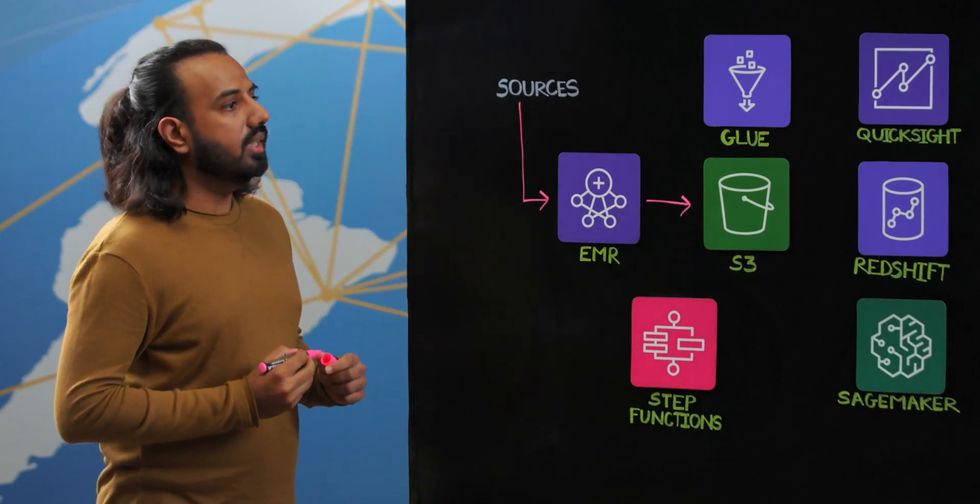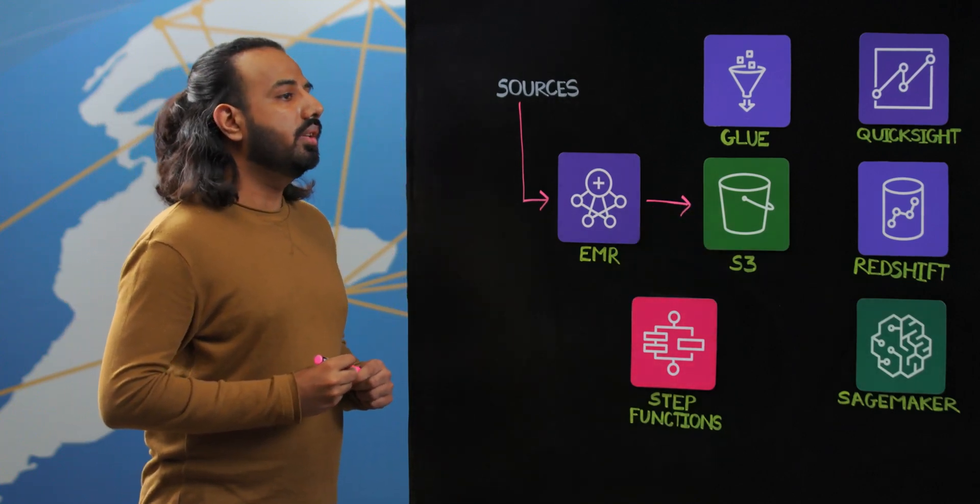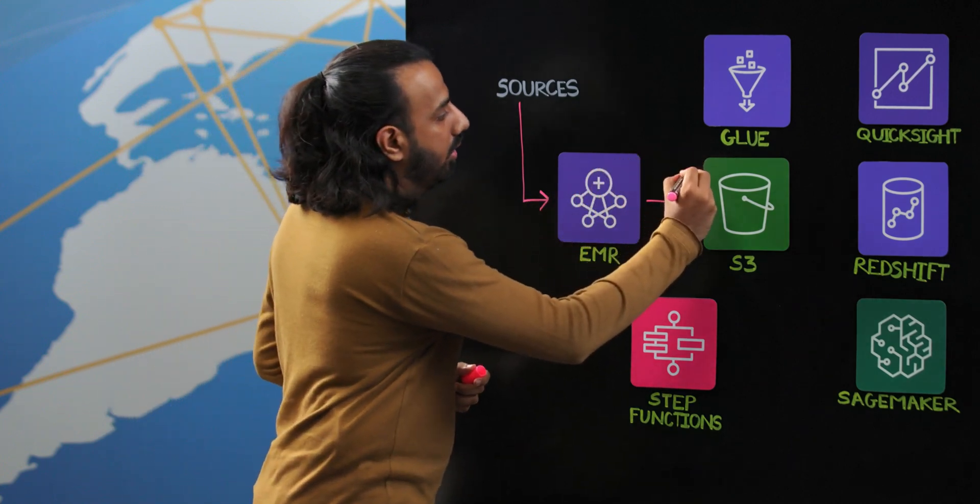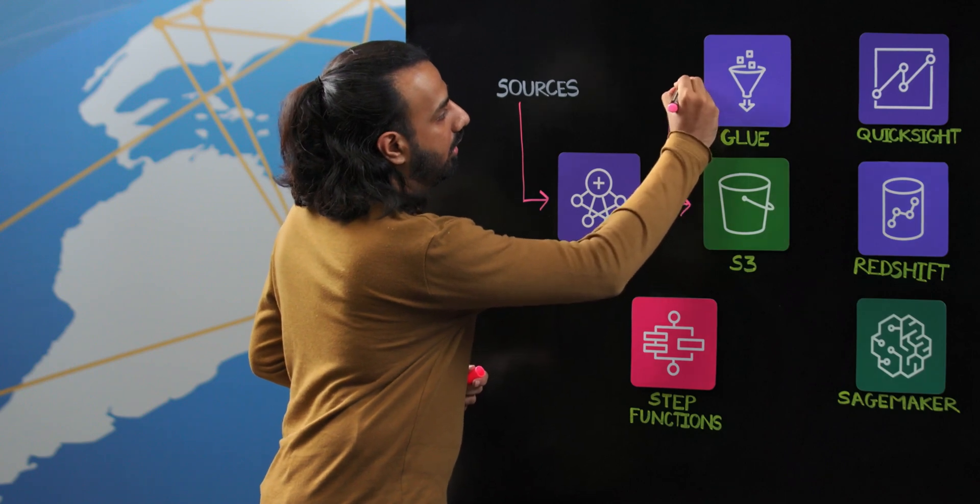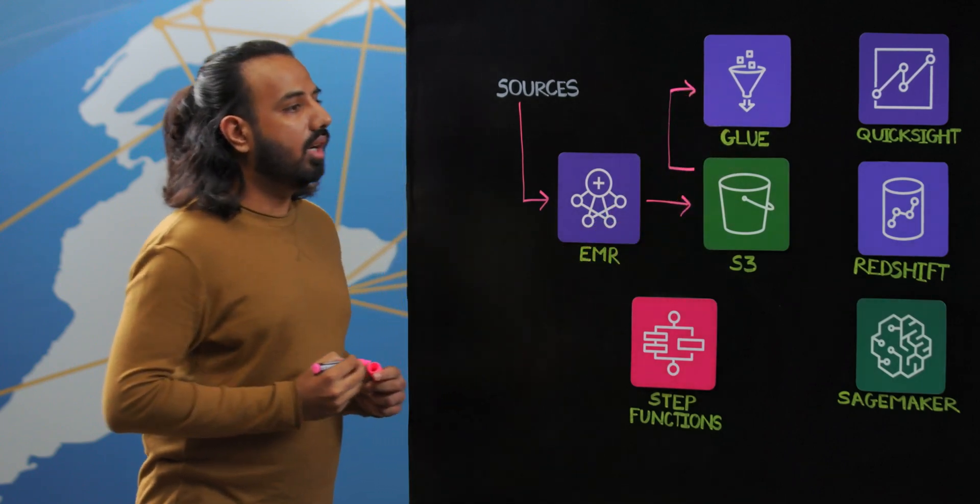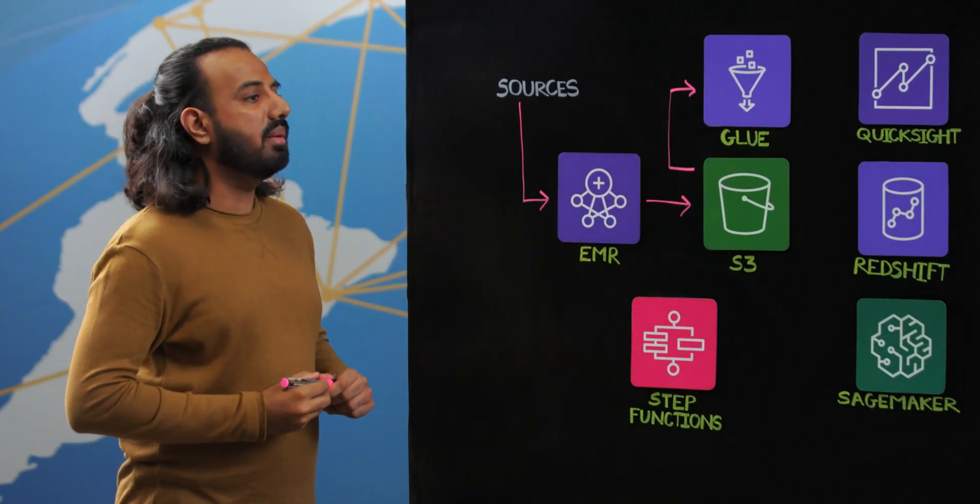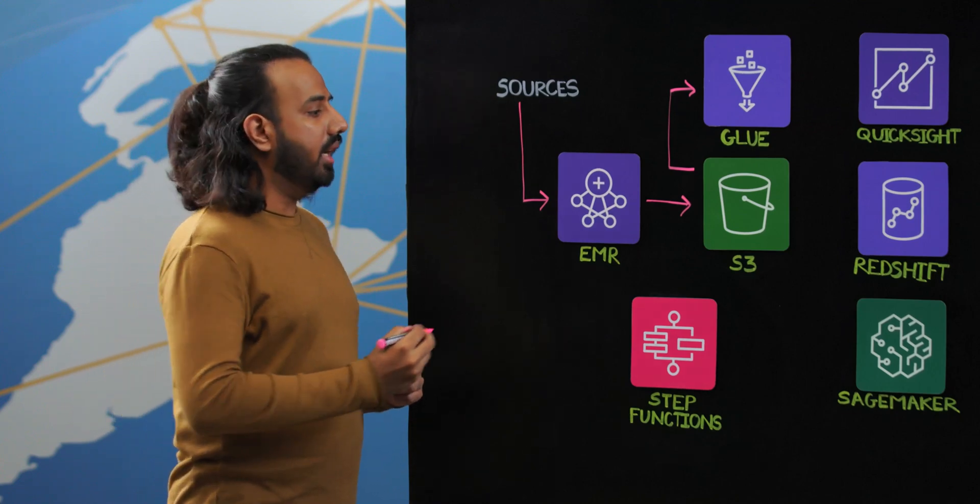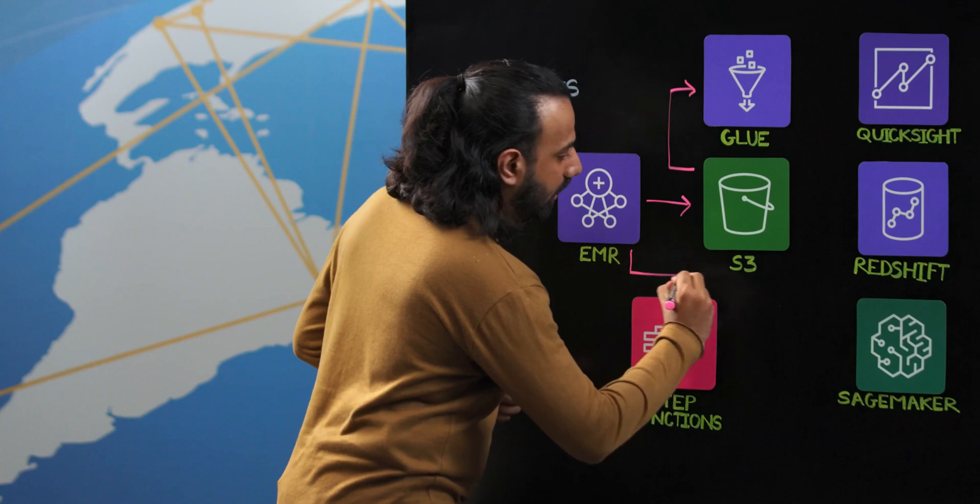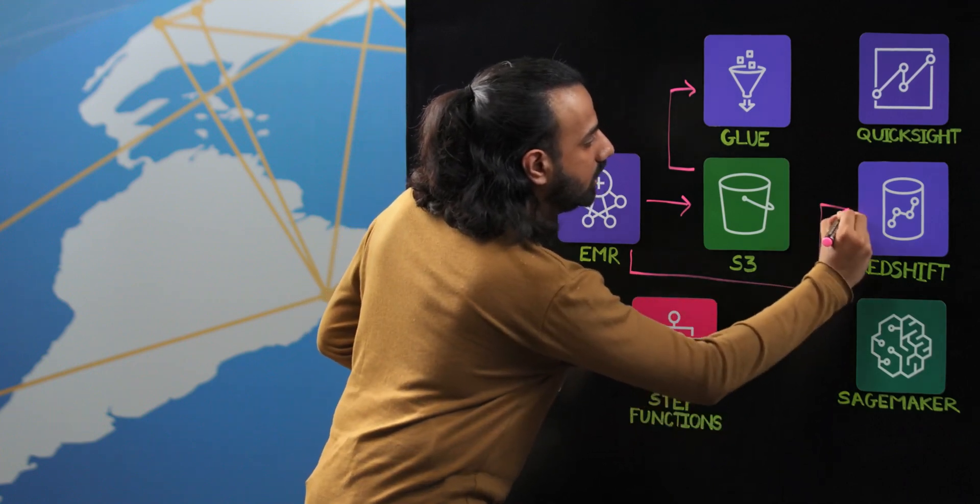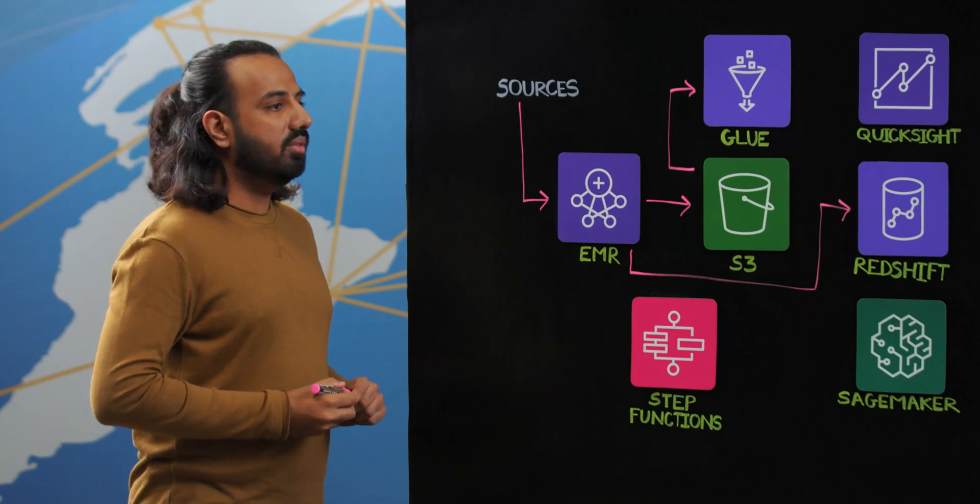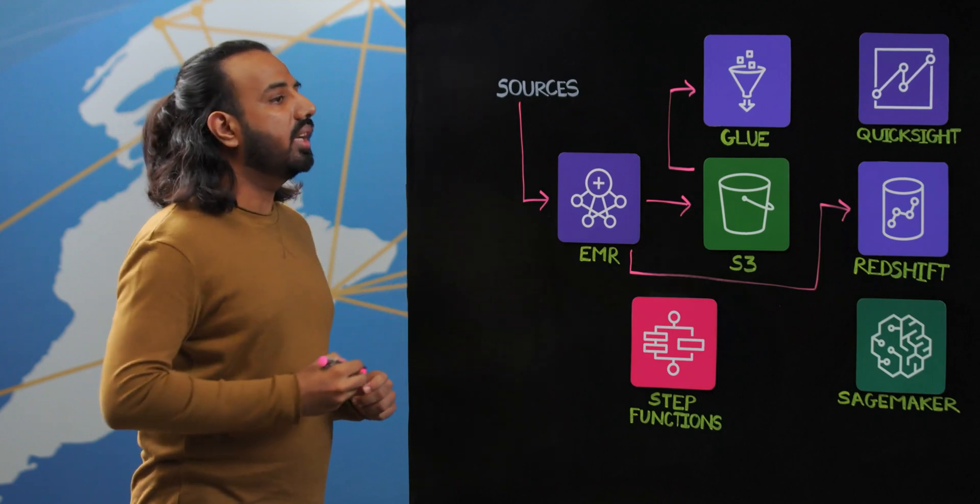Once the data is available in S3, we use them for cataloging which is done using Glue. And we again use the EMR clusters which are transient in nature to process the data and store it in Redshift. So all the data is now available in Redshift, which is our data warehouse, and can be used for ad hoc queries and reporting purposes.